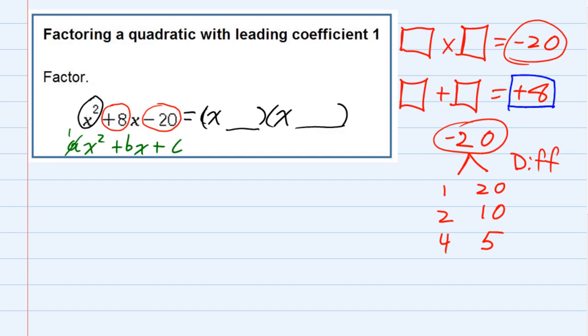So if I'm looking for two of these guys to have different signs and add up to a positive 8, there's only one combination that's going to work, and that's these two. If the signs are different, I could use a negative 2 and a positive 10, and those would add up to a positive 8.